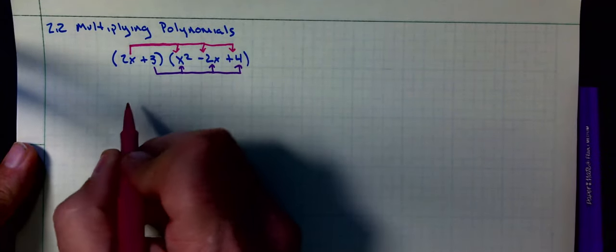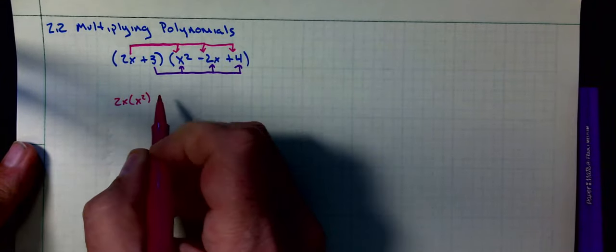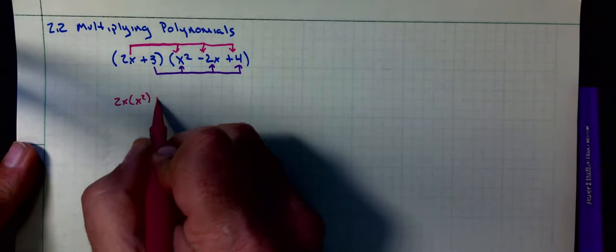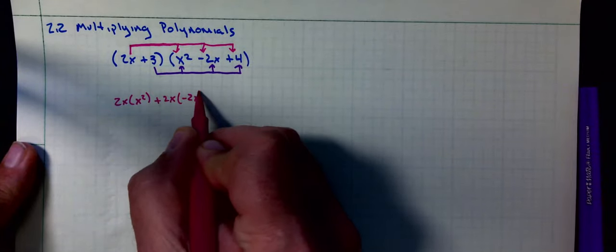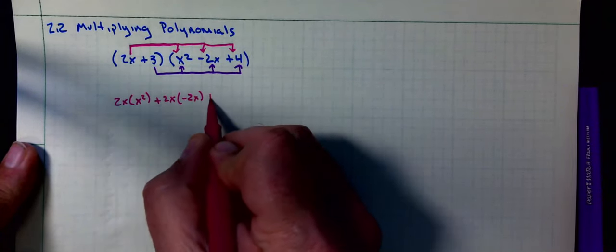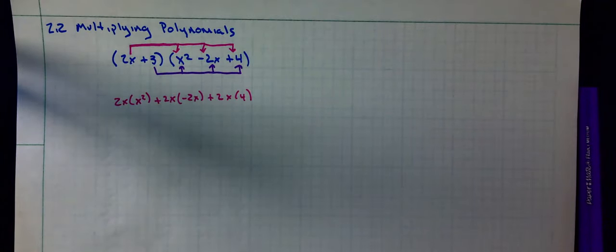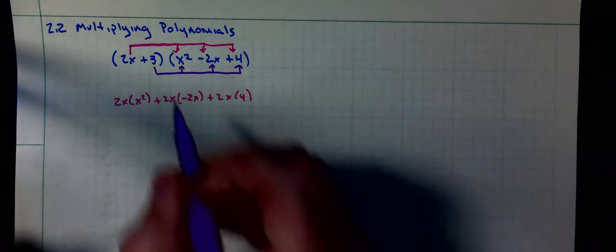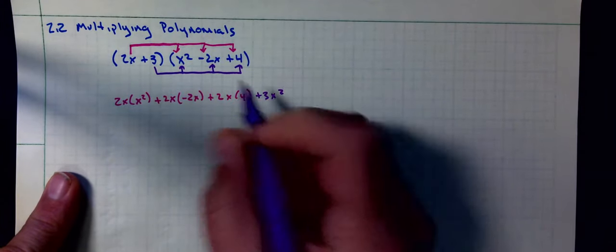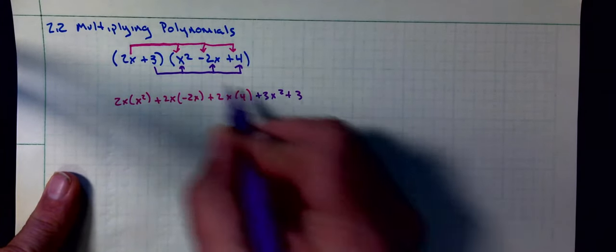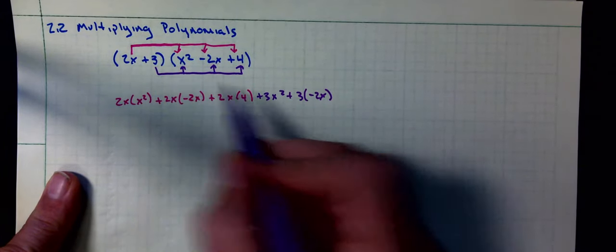2x times x squared, write it all out. Plus 2x, negative 2x, plus x, and I'm going to have plus 3 times x squared, 3 negative 2x, 3 times 4.